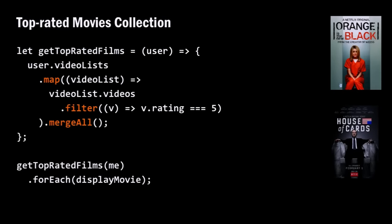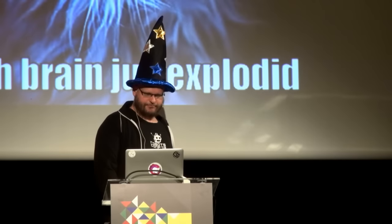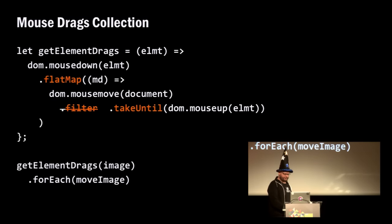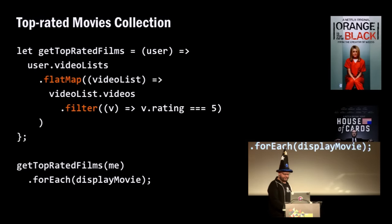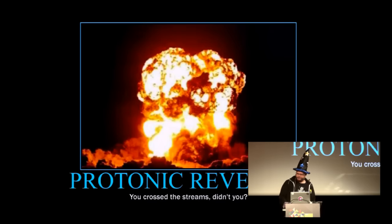We can look at how Netflix gets your top-rated movies: start with a user, look over their video list, map with their video list, filter where the rating is top five, and merge them all — or just call flat map. What if I told you that same code could create a drag event? Instead of filter, we have takeUntil. So we have takeUntil DOM mouse-move-up, or just flat map. That's it — you are now reactive extensions programmers.